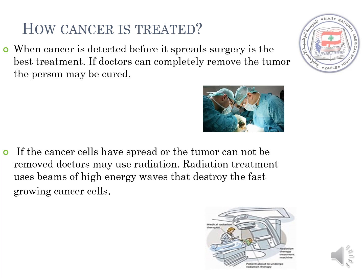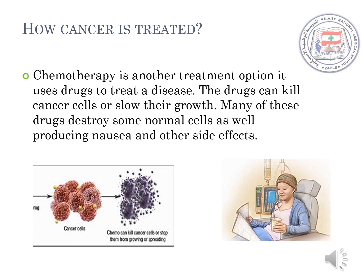If the cancer cells have spread or the tumor cannot be removed, doctors may use radiation. Radiation treatment uses beams of high-energy waves that destroy the fast-growing cancer cells. Chemotherapy is another treatment option — it uses drugs to treat a disease. The drugs can kill cancer cells or slow their growth. Many of these drugs destroy some normal cells as well, producing side effects such as nausea and other undesirable effects.